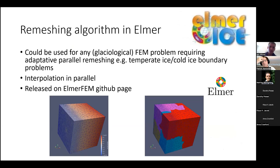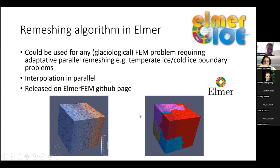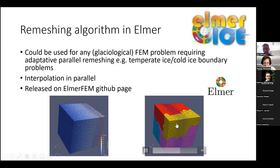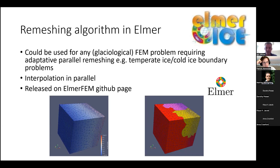In Elmer, we've implemented parallel and adaptive parallel remeshing, which for glaciology could be used for a moving boundary between temperate and cold ice, and is useful for any glaciological or engineering problem requiring adaptive remeshing. The bottom-left video shows a simple advection across the x-axis where the fine mesh resolution follows it across. The right video shows this happening in parallel across four processes. This has been released on the Elmer GitHub page, and the Elmer team at CSC in Finland are actively developing it further for glaciological purposes.